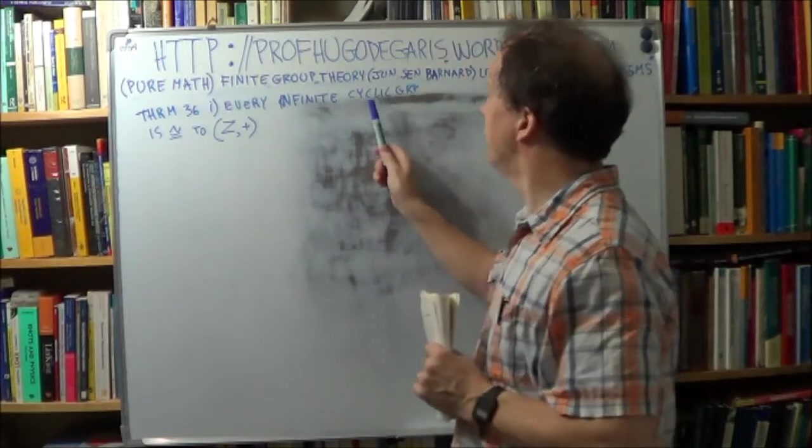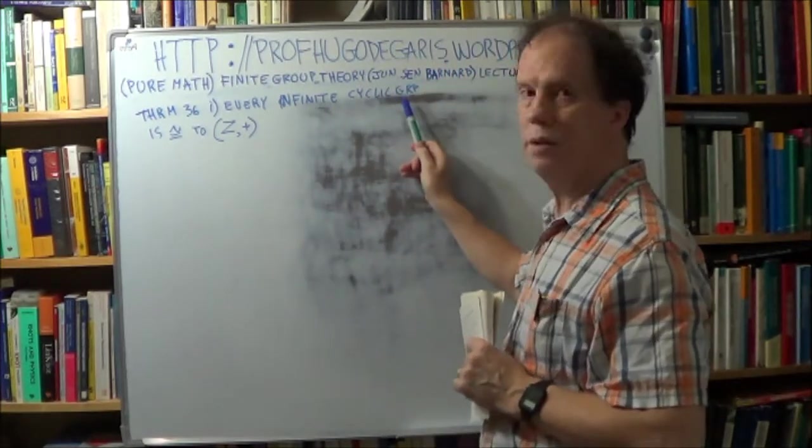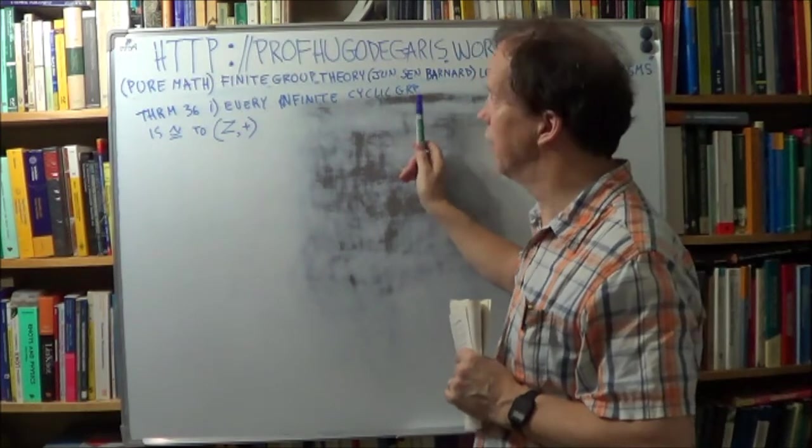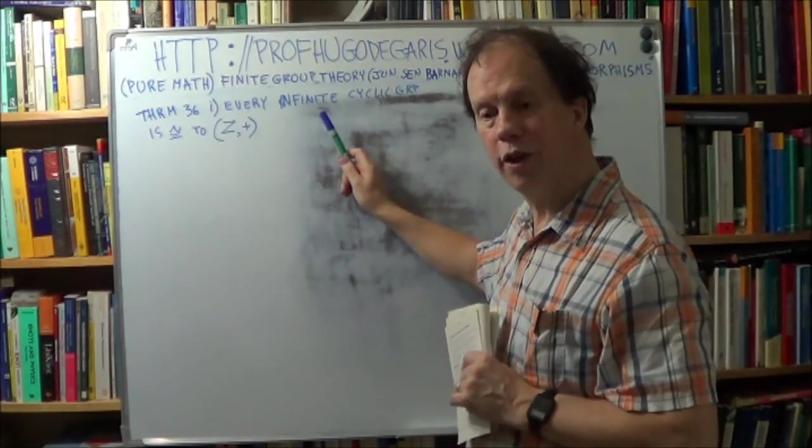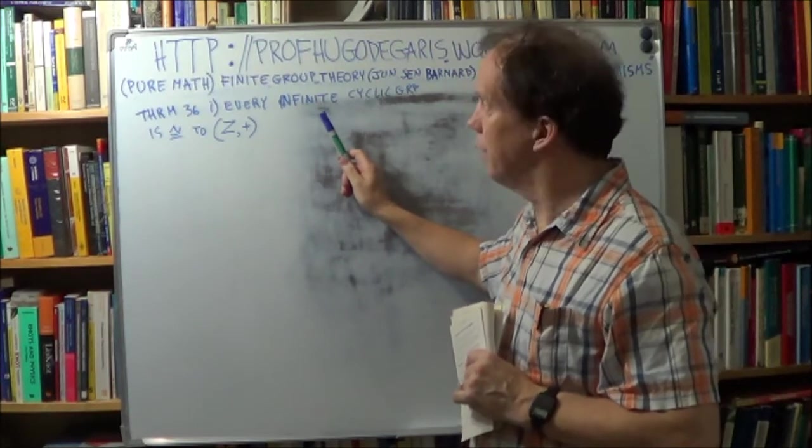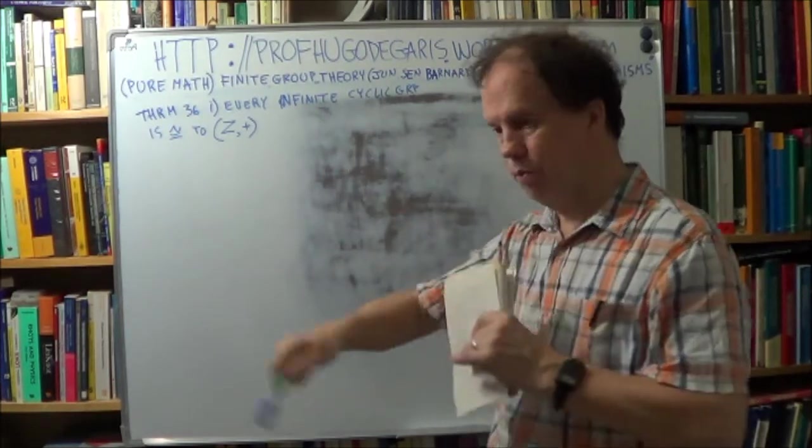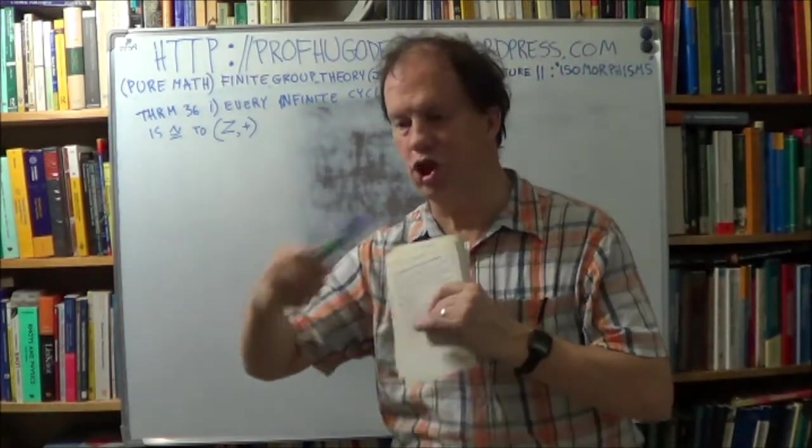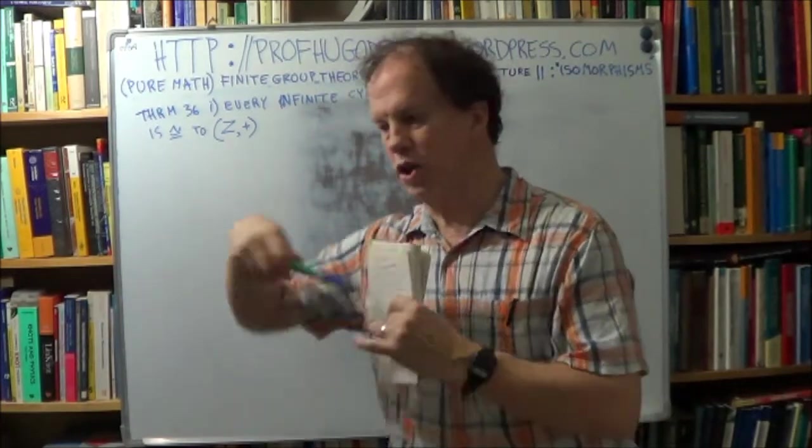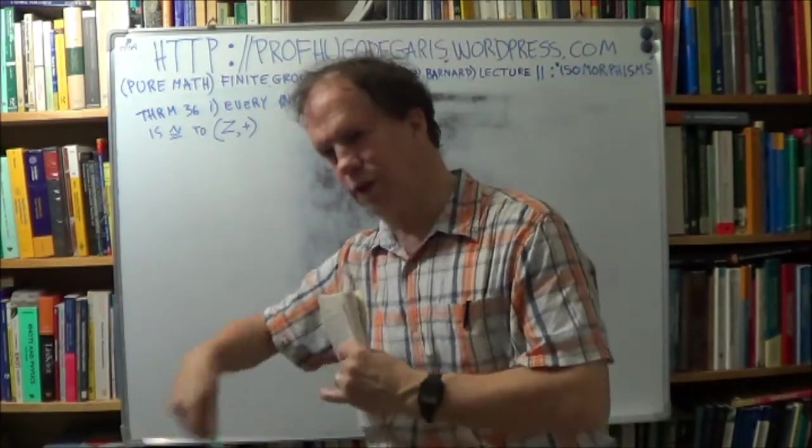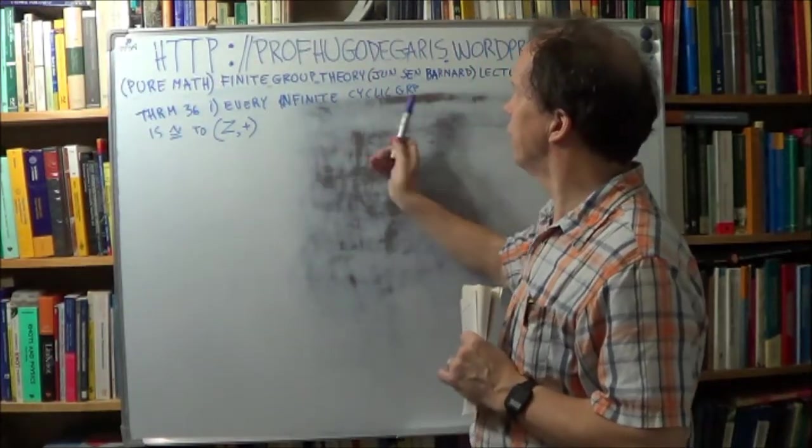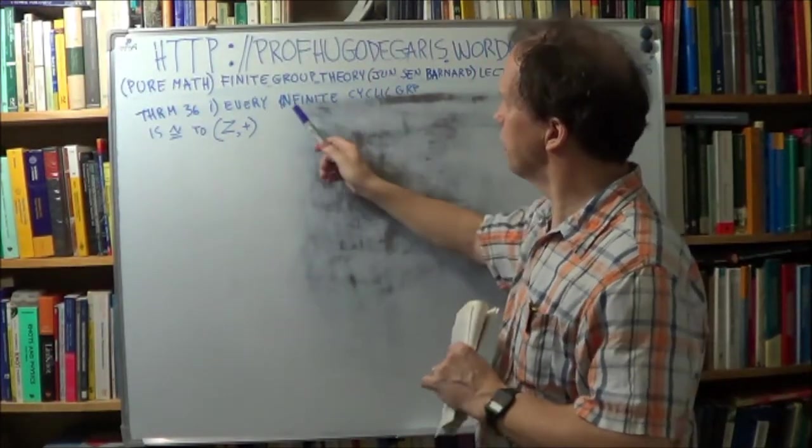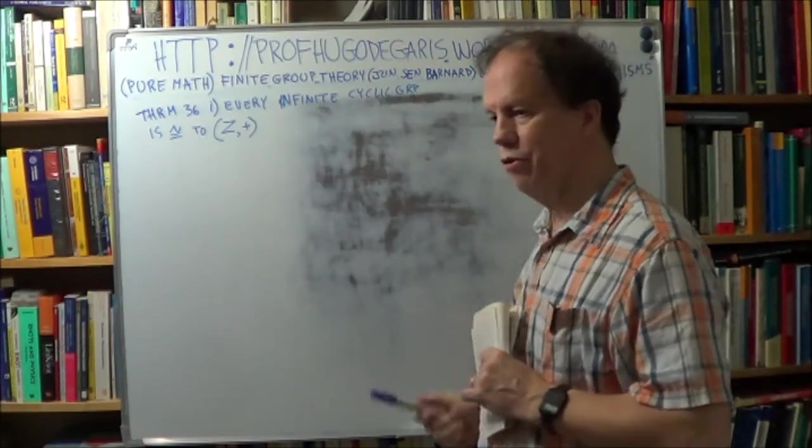So you can have a cyclic group, it has a generator, say little g, that's its generator, and if the order of that generator is infinity, that means the group that it generates, g, g squared, g cubed, g to the fourth, g to the fifth, g to the infinity, creates an infinite group, right? But it's a cyclic group, so you can have an infinite cyclic group.